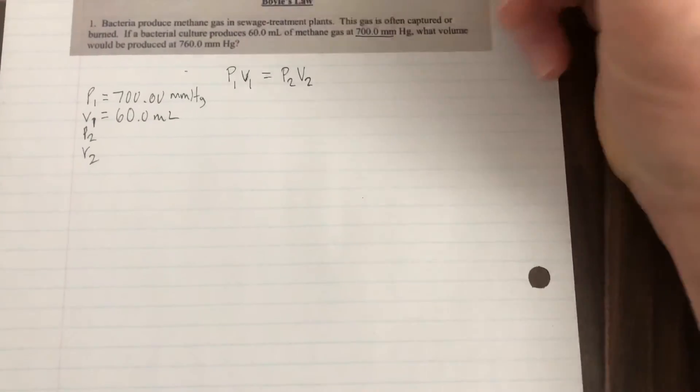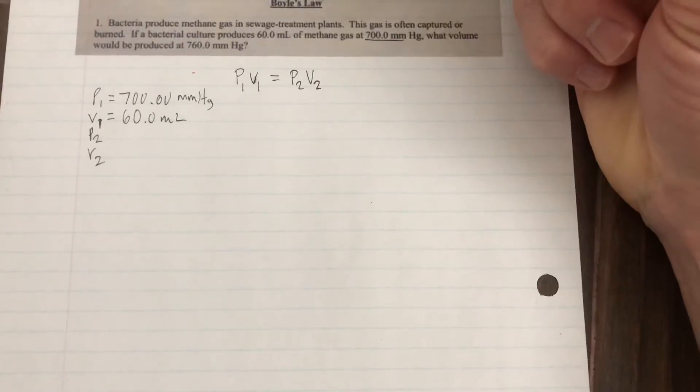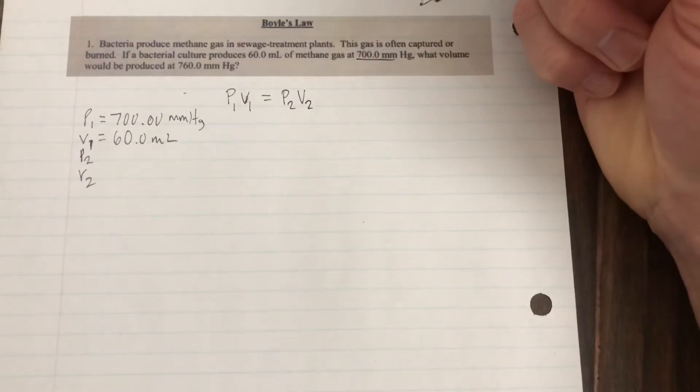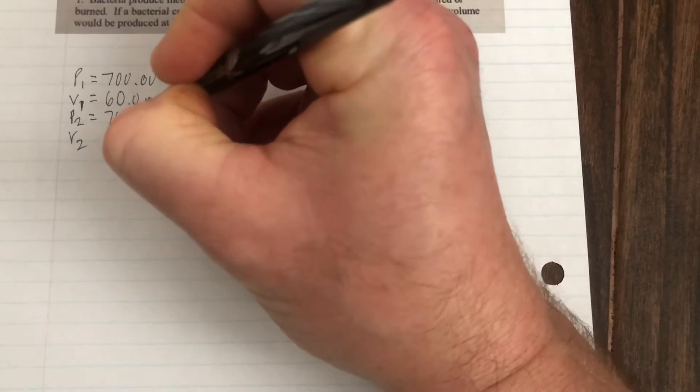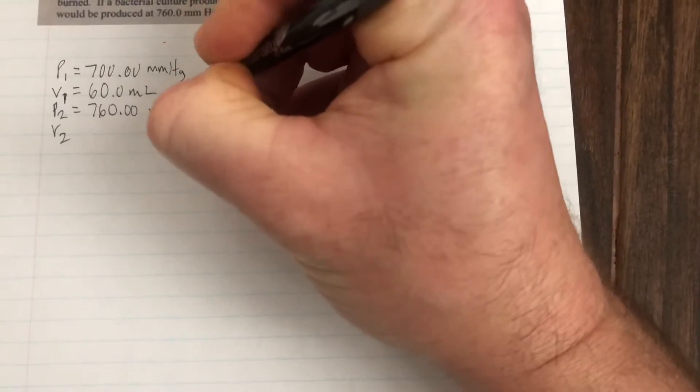So our initial pressure is 700 millimeters of mercury and the initial volume is 60 milliliters. It's worth noting you can use any units of pressure in this question or in the Boyle's Law formula. And the new pressure, they want us to come up with a volume at 760 millimeters of mercury.